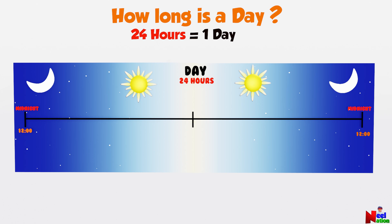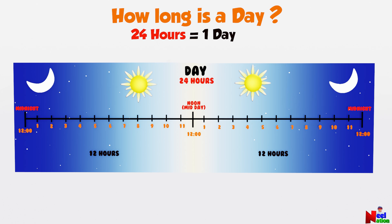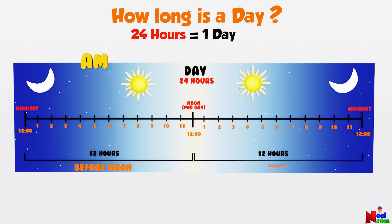A day is divided into two equal halves of 12 hours each. The midpoint is called noon or midday. The first 12 hours is called before noon, and we use AM to tell time from midnight to noon. The second half of the day is called afternoon, and we use PM for time from noon to midnight.